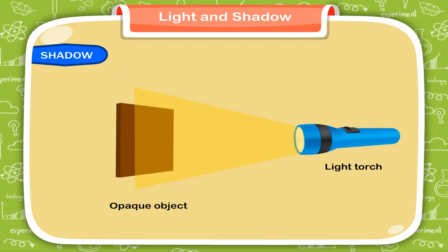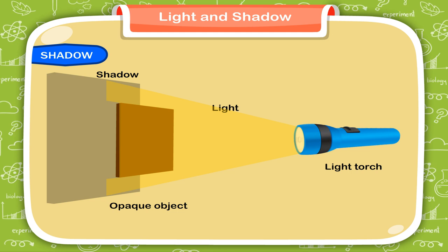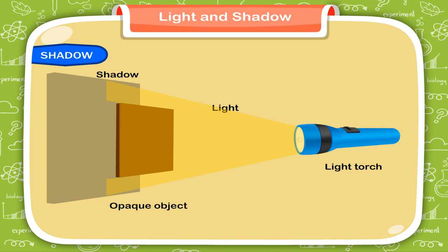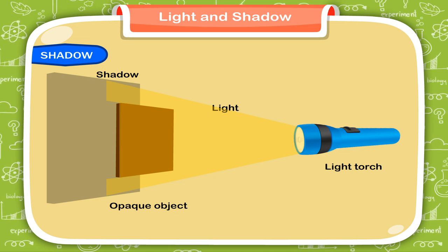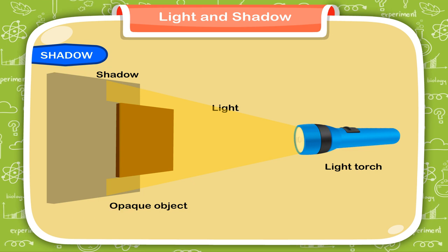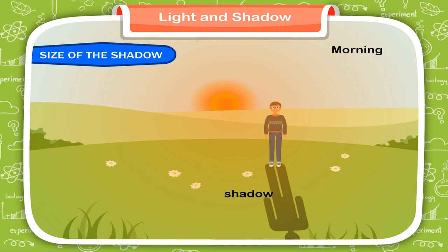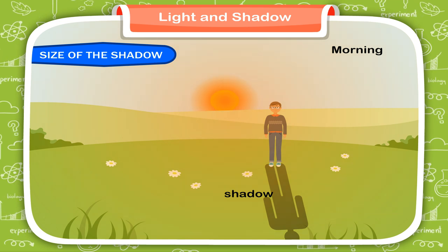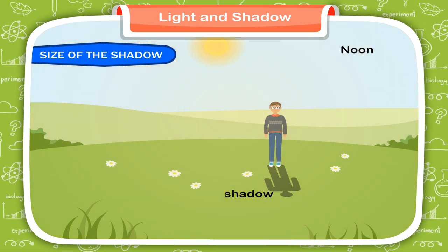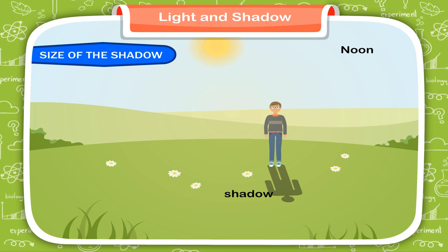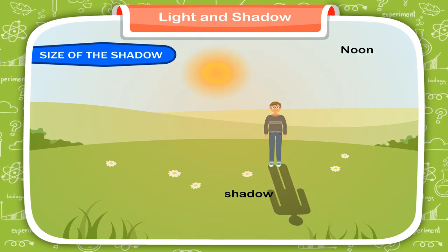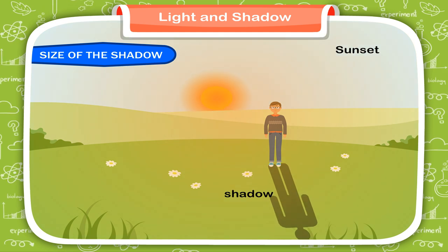Shadow. When light falls on an opaque object, it cannot pass through it. When an opaque object is placed in the path of light, a dark patch is obtained behind the object. This dark patch is called its shadow. Shadows are very long in the morning when the sun rises. Their length starts decreasing till noon and they are shortest at noon. Shadows go on increasing in the afternoon and become very long just before sunset.